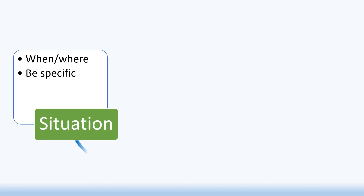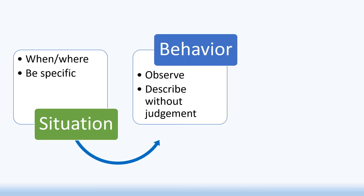B is for Behavior. Describe the actual observable behavior. You should describe this behavior objectively — meaning describe what you observed, not your feeling, judgment, or impression. Just describe the situation as it occurred.